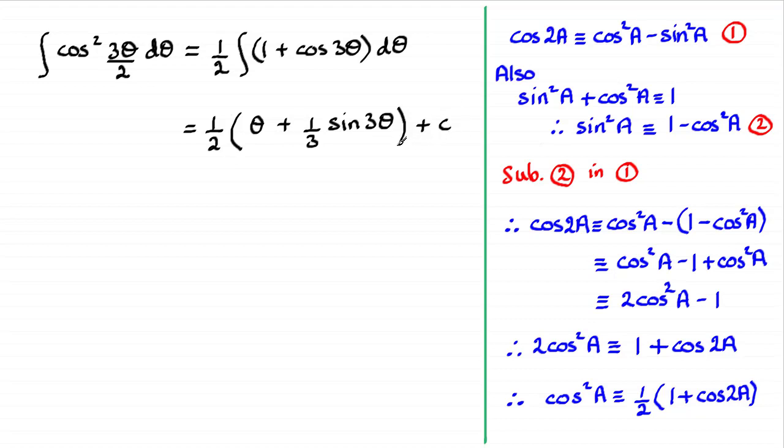Now you could leave your answer like this, not forgetting that plus c is the constant. You could leave your answer like this or you could expand it out. If you were to expand it out, you're going to get a half theta plus one sixth sine 3 theta plus that constant of integration. I don't like having terms which are fractions. I like to reduce that down to a much simpler form. Less fractions, the better.